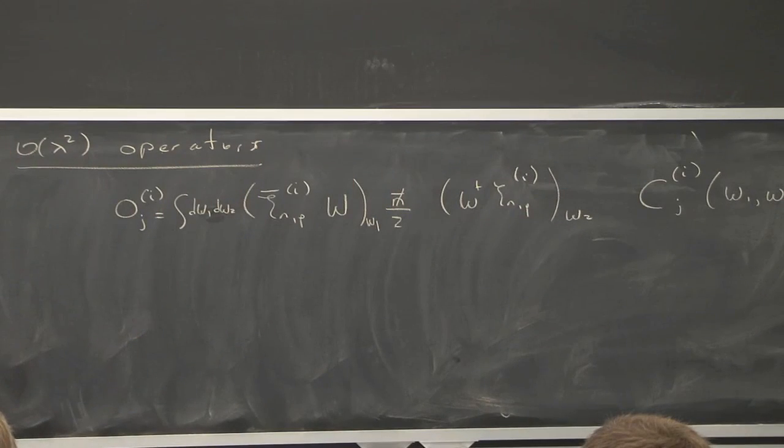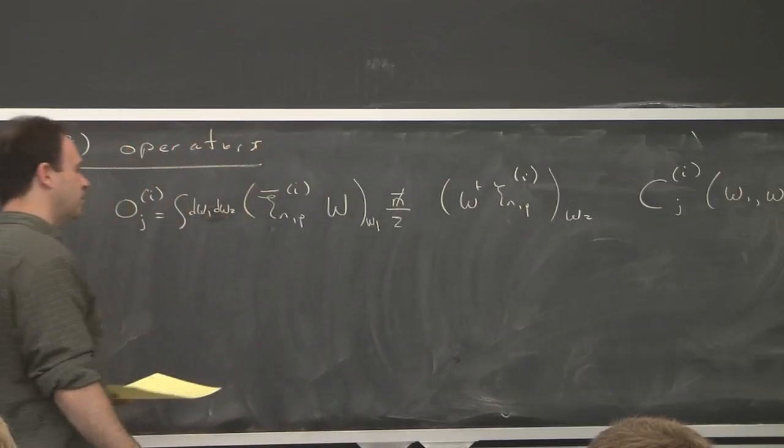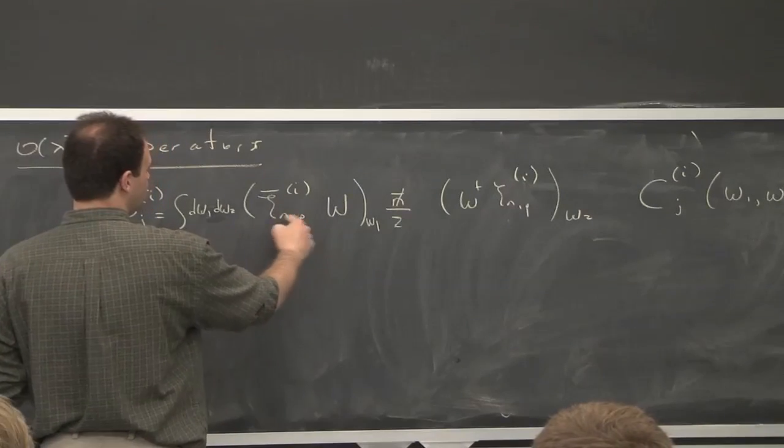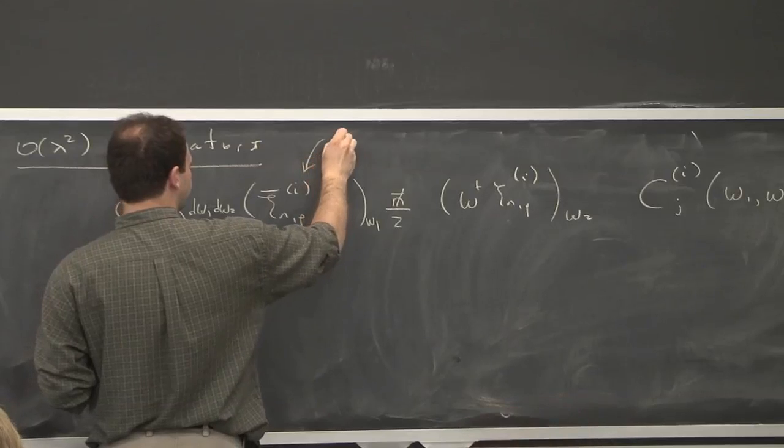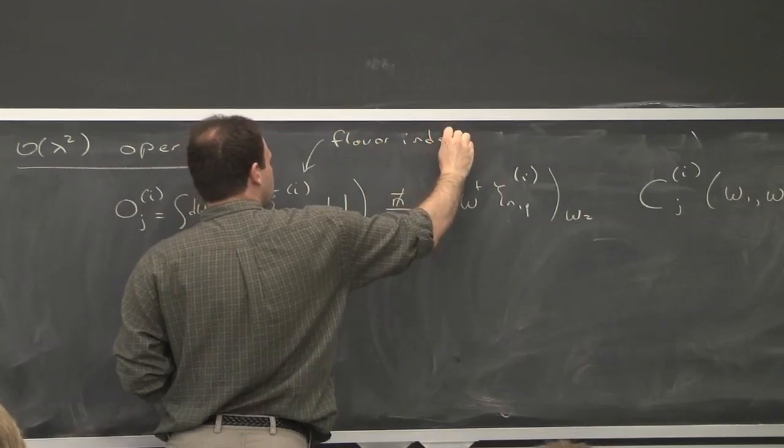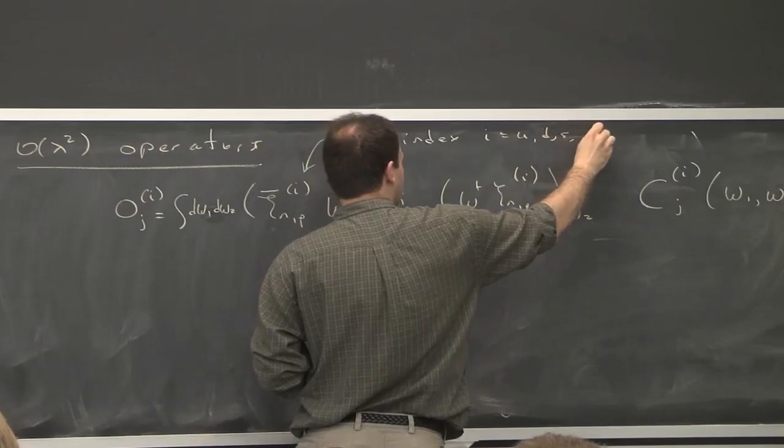So the type of operator we'd have that's order lambda squared. This guy's order lambda. This guy's order lambda. This is lambda squared. And the most general thing we could think of is this. The reason why I wrote this out, rather than writing it as a chi field, is I wanted to emphasize that there's a flavor index. So i is up quarks, down quarks, strange quarks, et cetera.